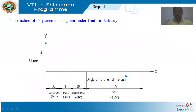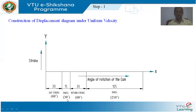Now let's see the steps involved in construction of the displacement diagram under uniform velocity. Step 1: Draw a line along the x-axis. Dimensions along the x-axis represent the angle of rotation of the cam in degrees. Dimensions along the y-axis represent the stroke or displacement of the follower. Taking dimensions along the x-axis from the origin: 30 mm represents outstroke for 60-degree rotation of cam, next 15 mm represents the first dwell period for 30 degrees.